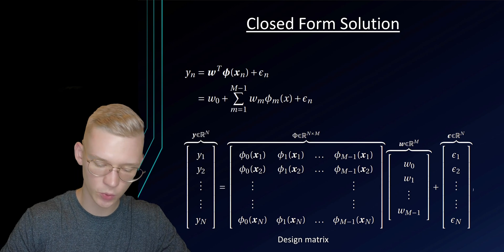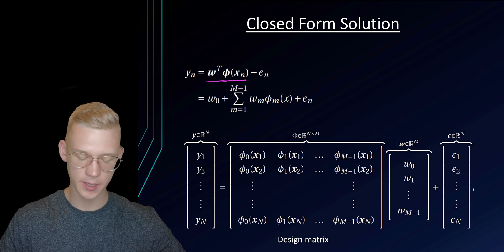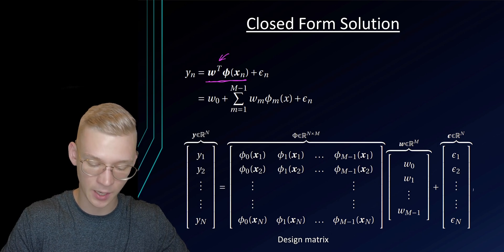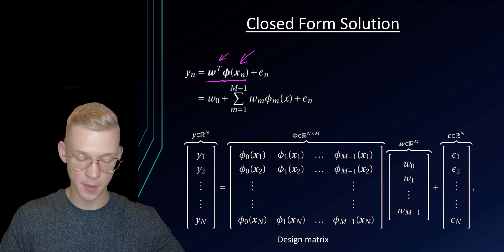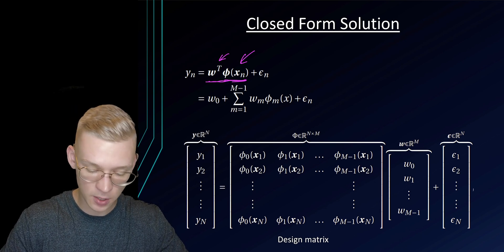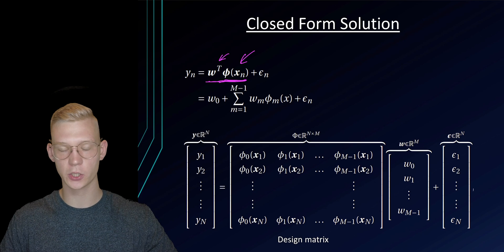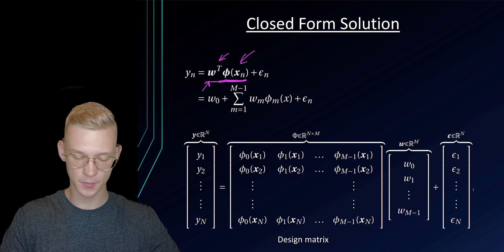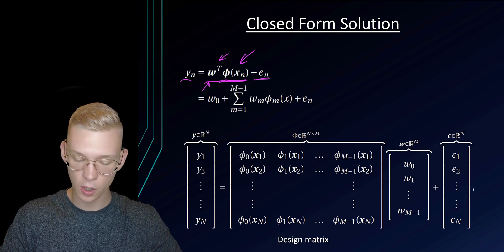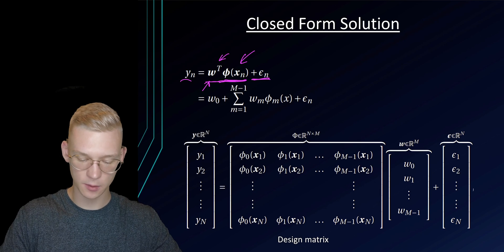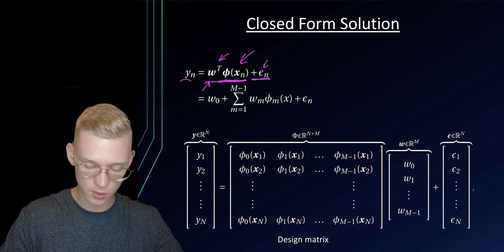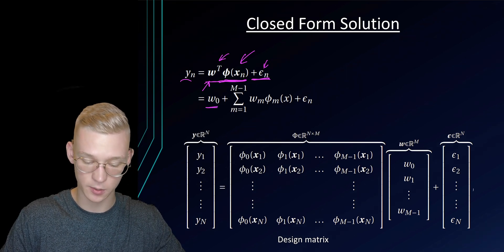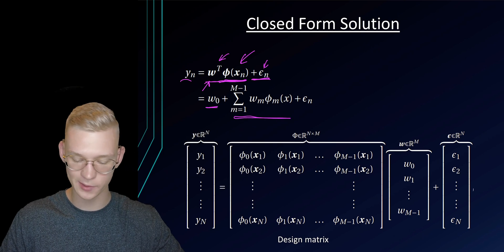So in the last videos we talked about that we proposed a linear method or a linear statistical model with parameters w that are our weights and our basis functions phi of x. So phi of x are non-linear functions but we still call it a linear basis function model because it's linear in the parameters w. And our statistical model now also has a noise term that is epsilon n.